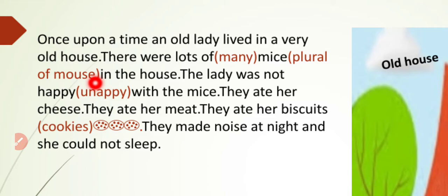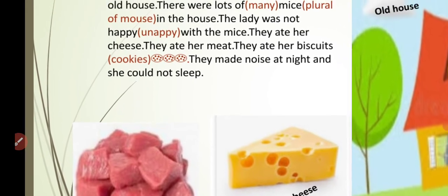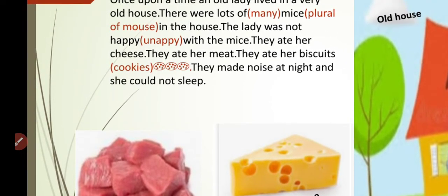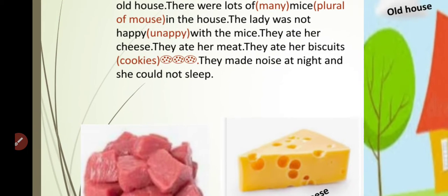The spelling of unhappy is U-N-H-A-P-P-Y. 'They ate her cheese' — do you know what cheese is? You can see the picture. It is an eatable, mostly used in pizza and different foods. 'They ate her meat' — meat means ghost (گوشت). You can see in the picture this is meat. So the mice ate all her cheese and all her meat.